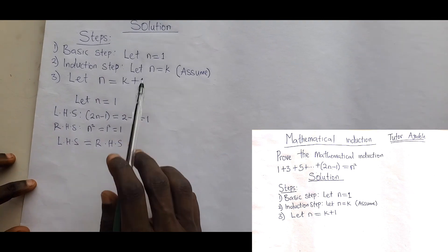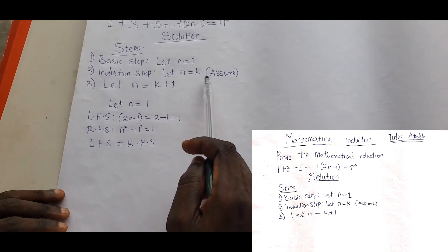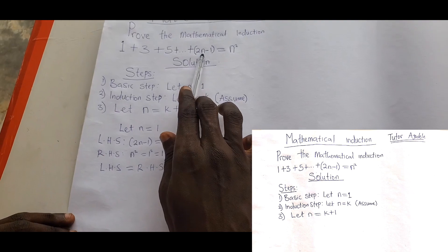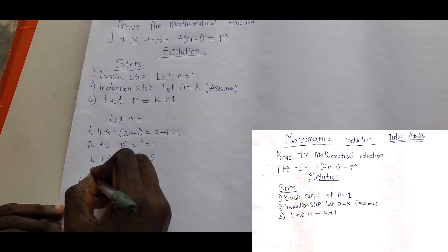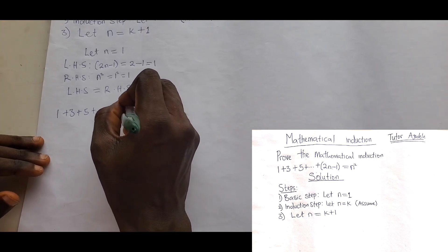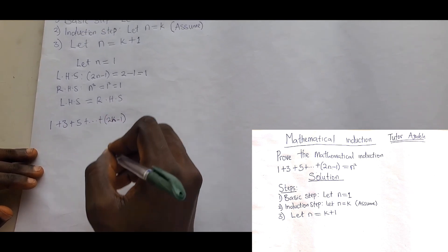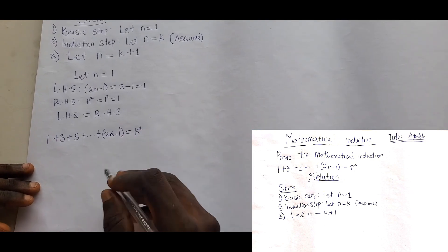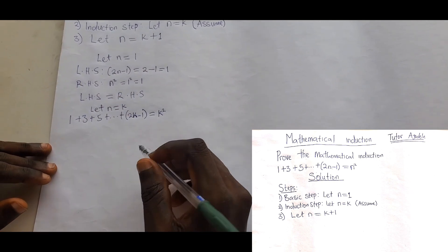The second step is the induction step. Here we assume that n equals k. I will replace wherever I find n with k. At the left-hand side, I have 1 plus 3 plus 5 plus 2n — instead of 2n, I replace it with 2k. And here, instead of n squared, I replace it with k squared. Let n equal k.